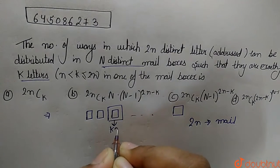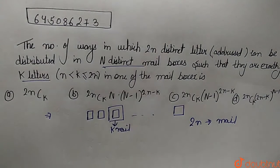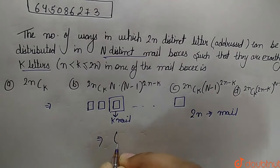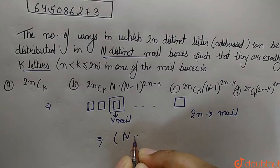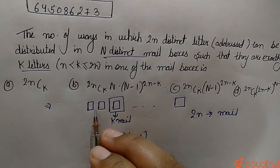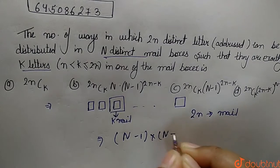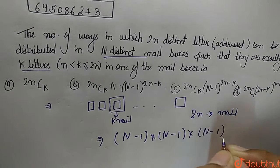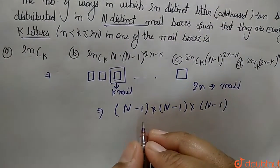There should be exactly one mailbox which will have exactly k letters. The remaining letters can be distributed among the other n minus 1 mailboxes — whether it can be in the first box, the second mailbox, or the third mailbox — giving n minus 1 choices for each remaining letter.